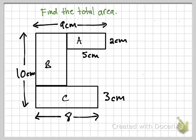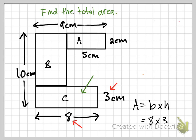For this last problem, we're asked to find the total area of this shape, so I'll find the area of each individual rectangle. Starting with rectangle C: the height is 3 and the base is 8. Using area equals base times height, 8 times 3 equals 24, so the area of C is 24 centimeters squared.